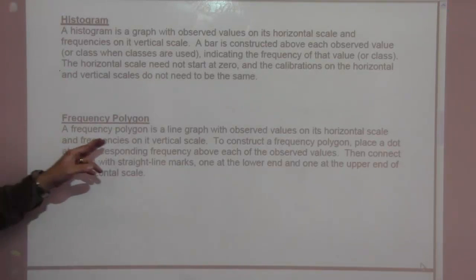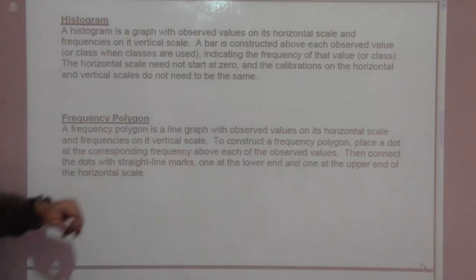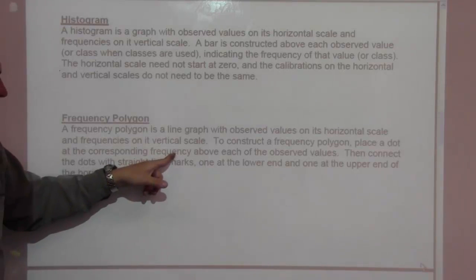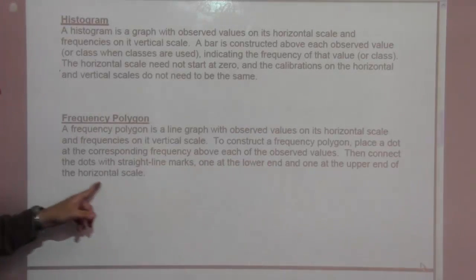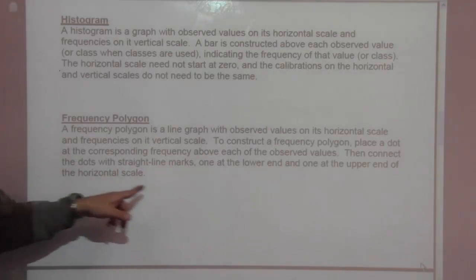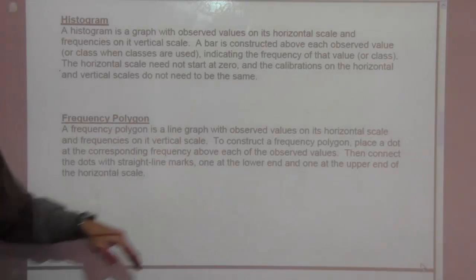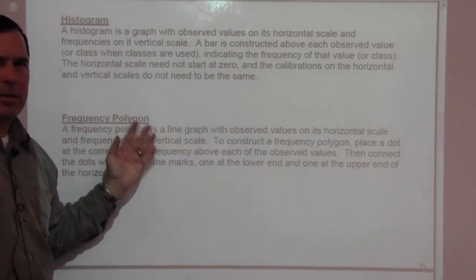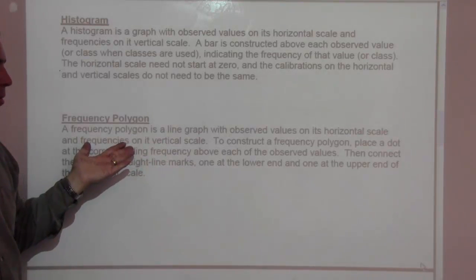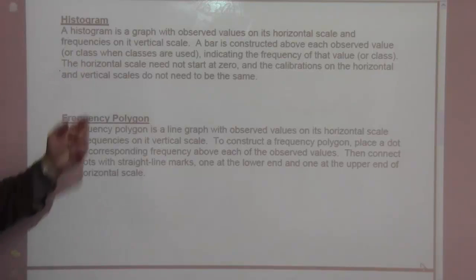Frequency polygon. A frequency polygon is a line graph with observed values on its horizontal scale, and frequencies on the vertical scale, so you put dots. To construct a frequency polygon, place a dot at the corresponding frequency above each of the observed values, then connect the dots with the straight line marks, one at the lower end and the upper end of the horizontal scale. So go up, do whatever, and go back down. These are not used very often, frequency polygons. Honestly, I've seen them in this book, maybe a couple others, but really we relate to histograms a little more.